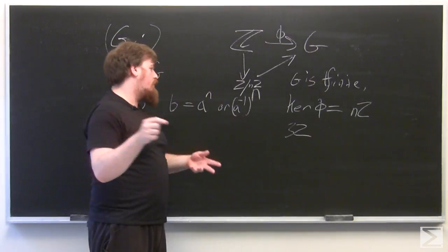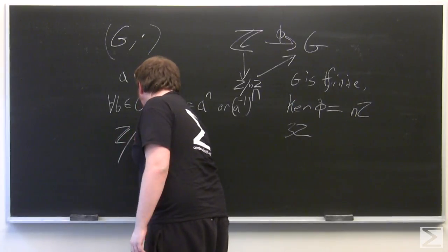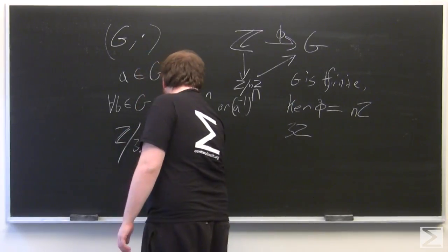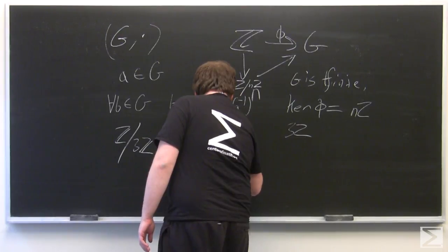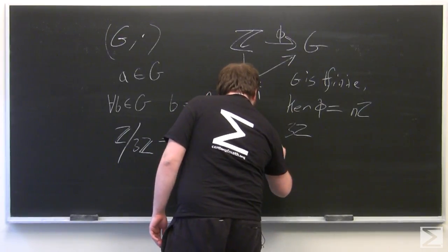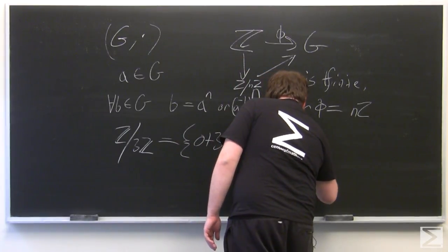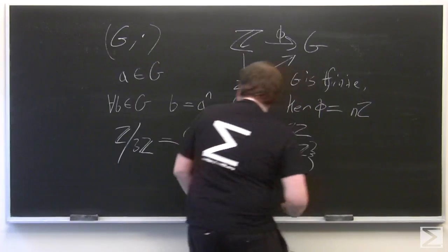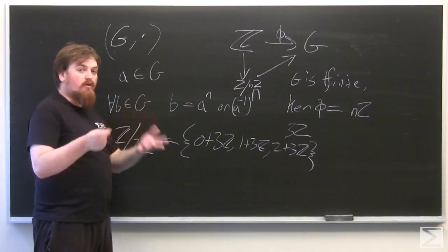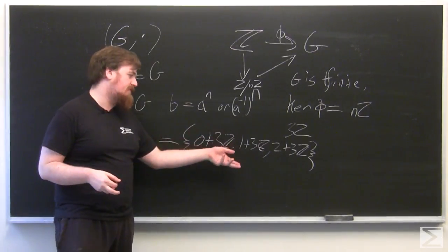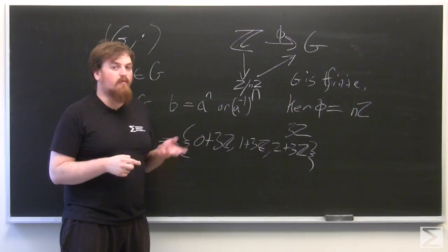So if you look at Z modulo 3Z, right here, 3Z is going to be the set of all integers divisible by 3. And the cosets of 3Z are going to be 0 plus 3Z, 1 plus 3Z, and 2 plus 3Z. Because every element of the integers is either a multiple of 3, a multiple of 3 plus 1, or a multiple of 3 plus 2.